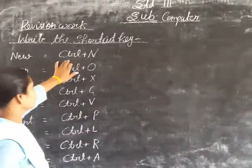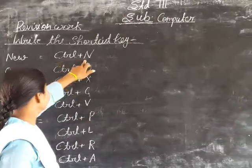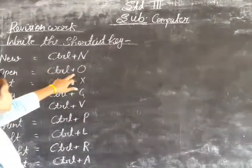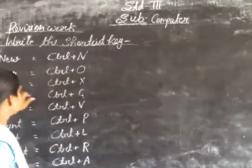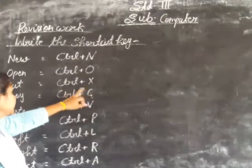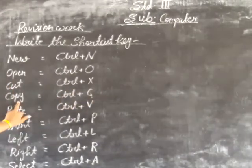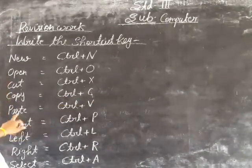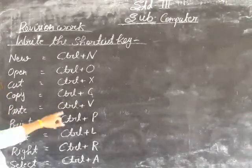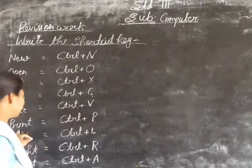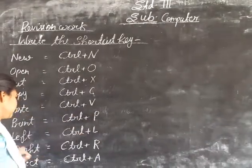New: Control+N. Open: Control+O. Cut: Control+X. Copy: Control+C. Paste: Control+B. Print: Control+B.